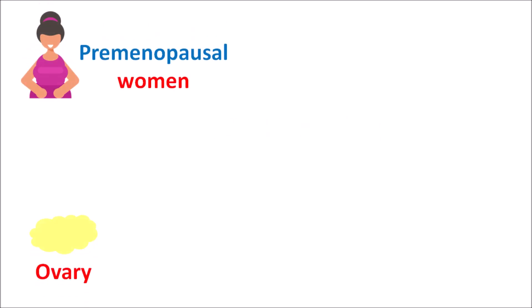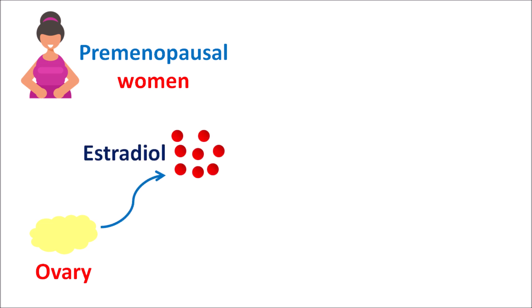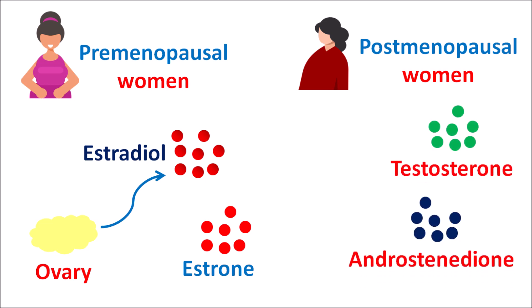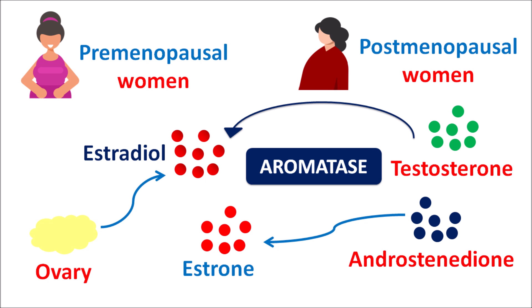In premenopausal women, the ovary acts as an important source for the production of estrogens. From the ovary, estrogens like estradiol can be produced, which can be converted into estrone. But in postmenopausal women, estrogens are not produced from the ovary because of menopause; they are derived from androgens. Testosterone is one important source, and another is androstenedione.